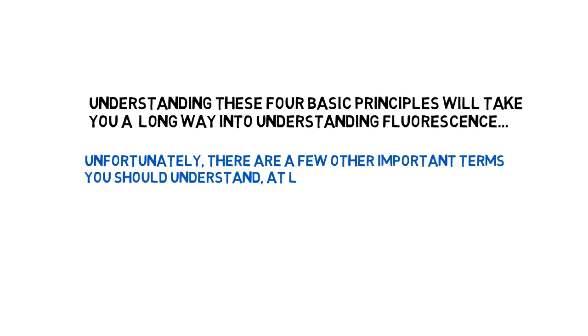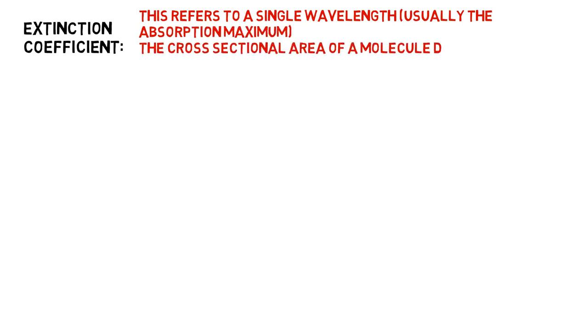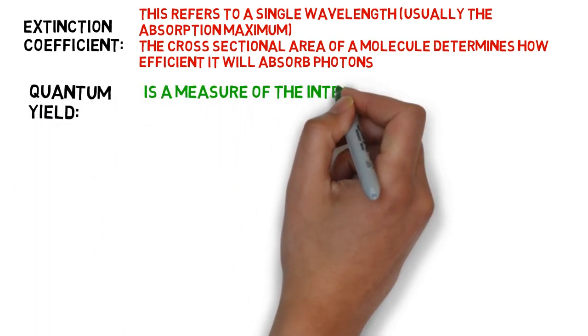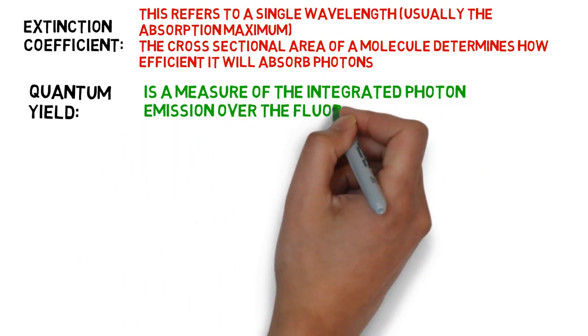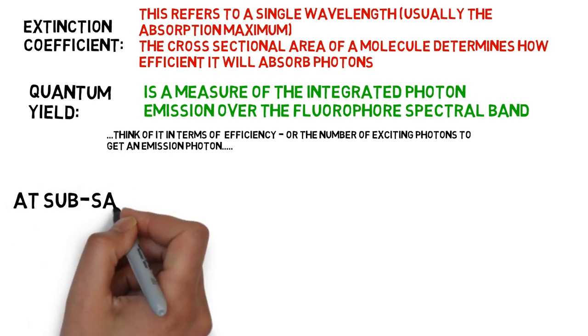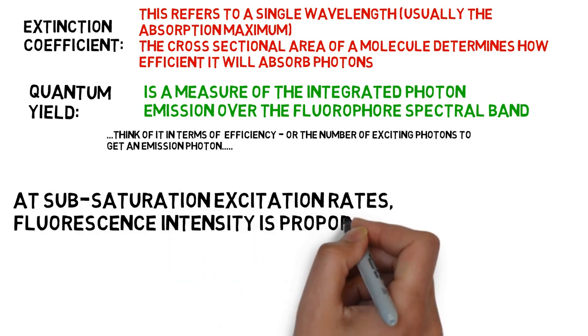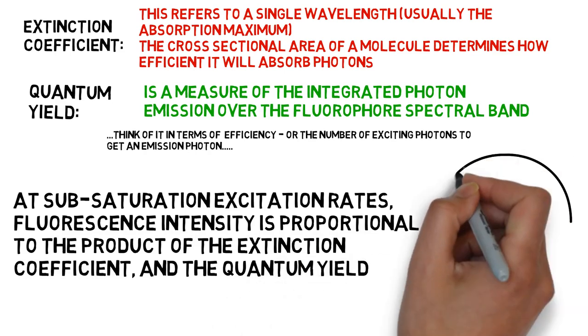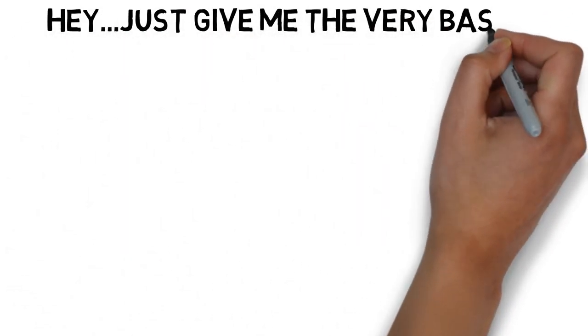Unfortunately, there are a few other important terms you should understand, or at least know the basics. Extinction coefficient. This refers to a single wavelength, usually the absorption maximum. The cross-sectional area of a molecule determines how efficient it will absorb photons. Quantum yield. This is a measure of the integrated photon emission over the fluorophore spectral band. In fact, it's approximately equivalent to the number of excitation photons required to get one emission photon. It's how efficient that molecule is. At subsaturation excitation rates, fluorescence intensity is proportional to the product of the extinction coefficient and the quantum yield.